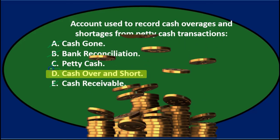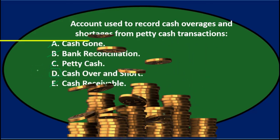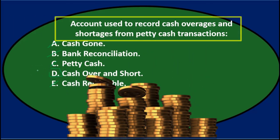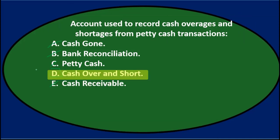Once again, question and answer: Account used to record cash overages and shortages from petty cash transactions — D, cash over and short.